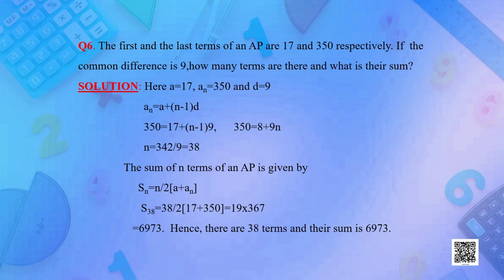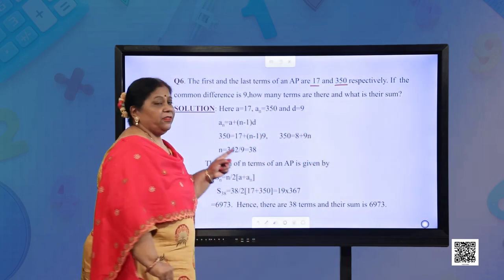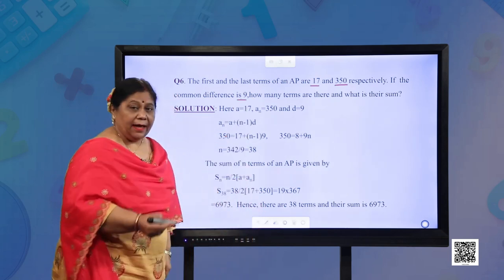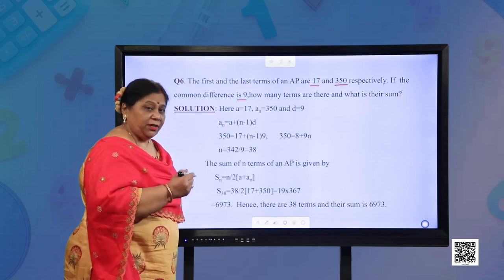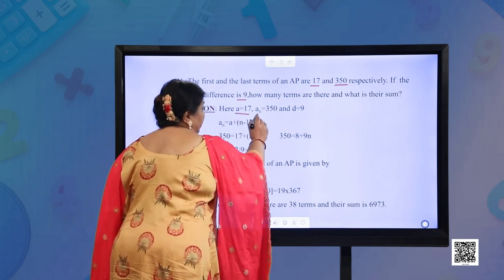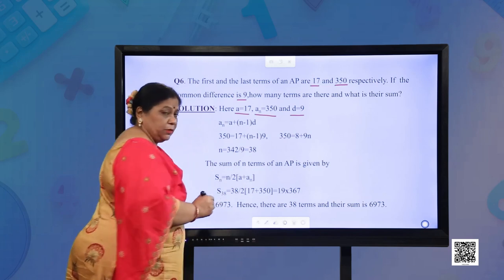Question number 6: the first and last terms of the AP are 17 and 350 respectively. If the common difference is 9, then how many terms are there and what is their sum? So A = 17, An = 350, and D = 9.